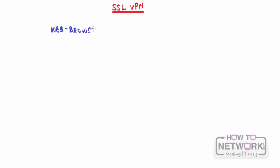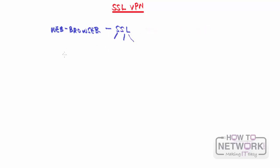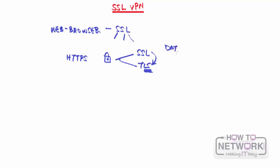SSL VPN uses the SSL protocol, which stands for Secure Socket Layer. You're probably familiar with SSL - when you open an HTTPS connection, logging into online banking and seeing the padlock, that means you're connecting securely using either SSL or TLS. SSL is actually the predecessor of TLS; TLS is the industry standard, but both have similar architecture with the end goal of providing data privacy, confidentiality, and data integrity.